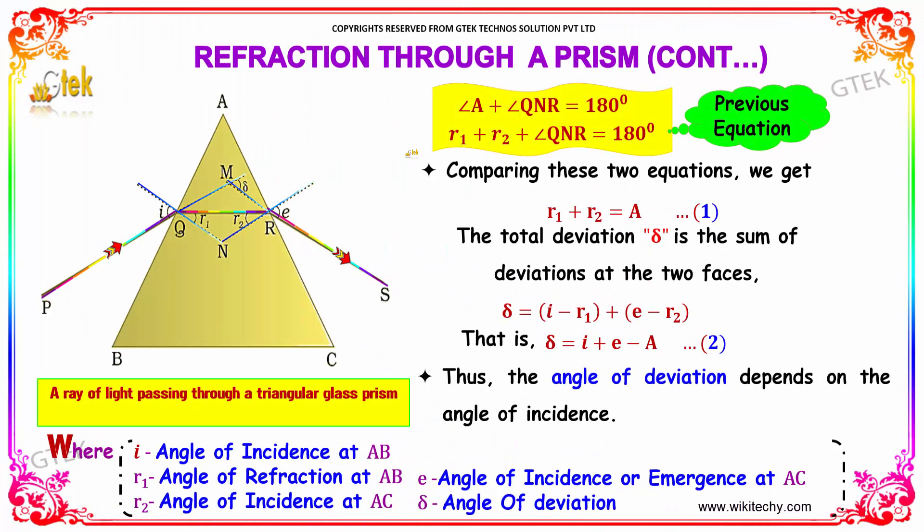We got angle A plus angle QNR equals 180 degrees. And this triangle we got 180 degrees. Comparing these equations, removing this QNR, you got r1 plus r2 is equal to A.